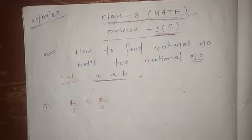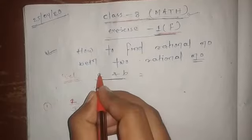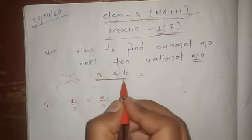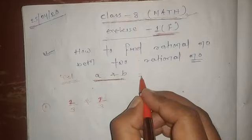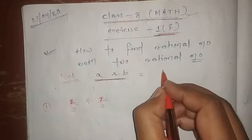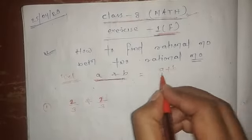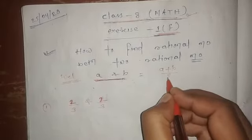So let us consider two numbers A and B. If we have to find a rational number between these numbers, simply we have to add these numbers like A plus B and then divide by 2. That would be the rational number between these numbers.